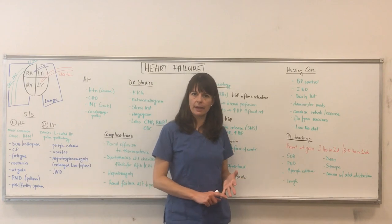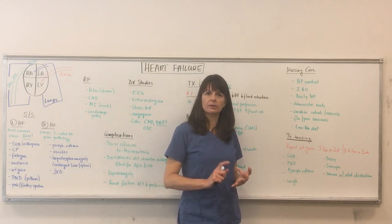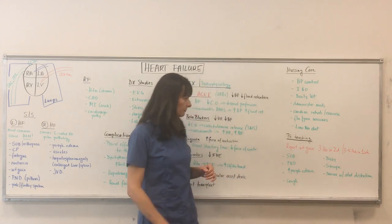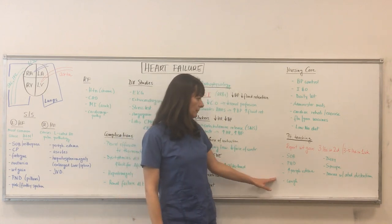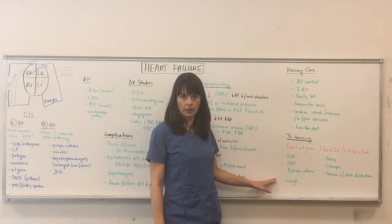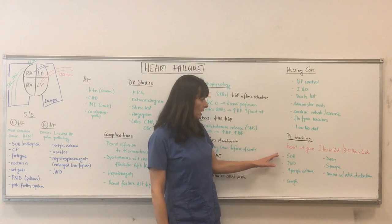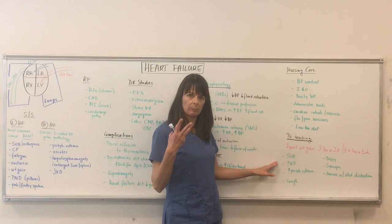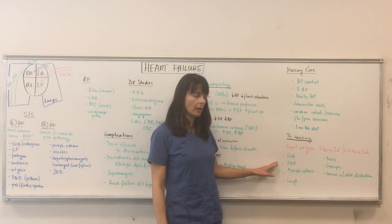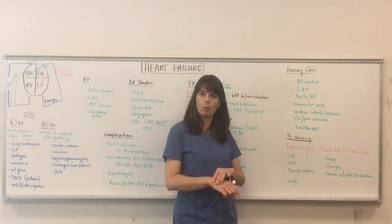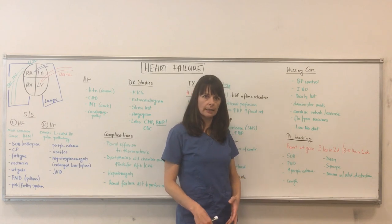That should be the same scale, at about the same time of day, with the same amount of clothing, so they can keep track of their fluid volume status. And we want to educate them to report any signs and symptoms to see if they are getting worse. Those include: report shortness of breath, paroxysmal nocturnal dyspnea — that's the one where the patient sleeps with extra pillows elevated — and increasing peripheral edema, which sometimes just means that their watch, rings, or socks are getting a little bit tighter.